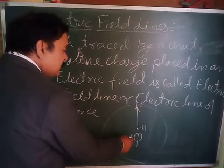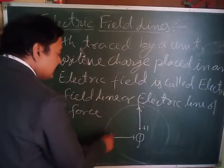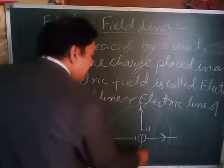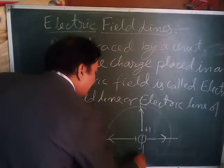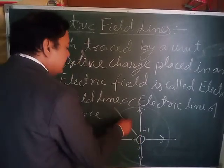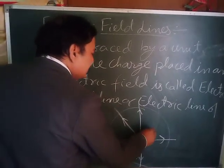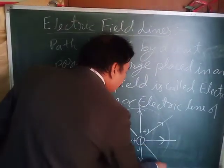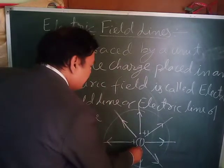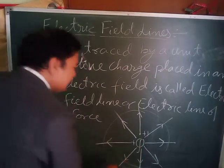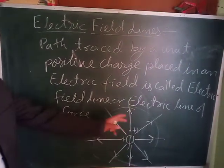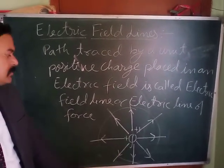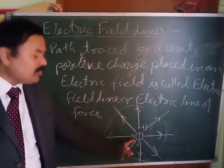If you place the unit positive charge at different positions around the positive charge, it will move away in different directions each time — like this, like this, like this, and so on. This gives us the overall pattern of electric field lines or electric lines of force due to a positive charge.